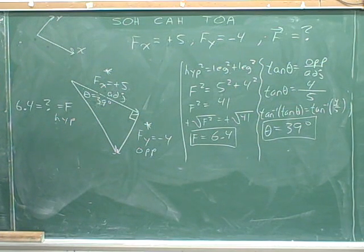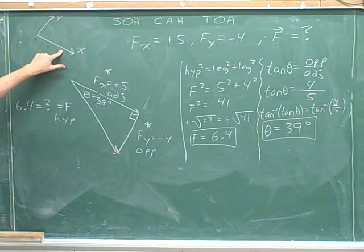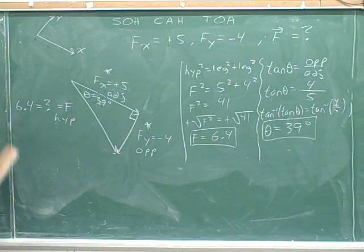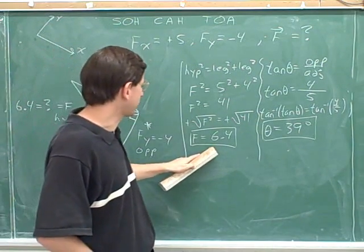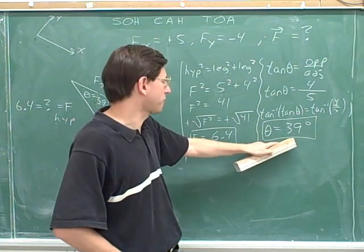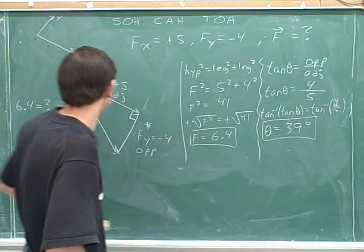Of course, you can't refer to the positive x axis unless you've shown the reader what your positive x axis is. So here would be a good answer: the magnitude is 6.4, and the direction is indicated by the angle of 39 degrees.